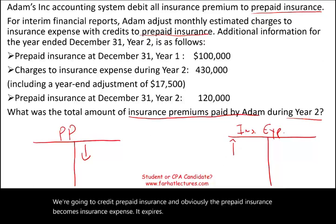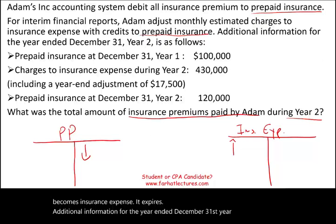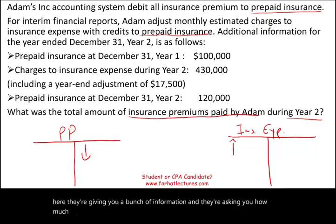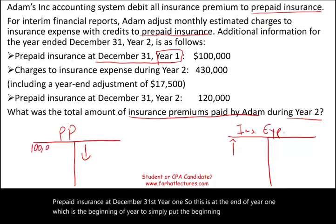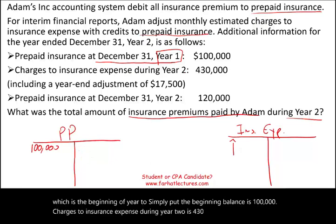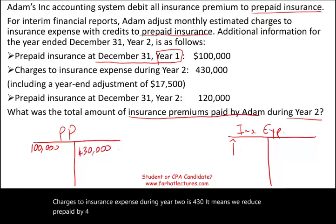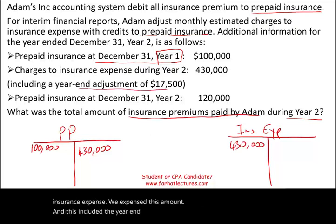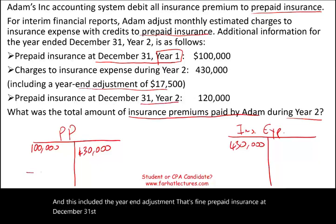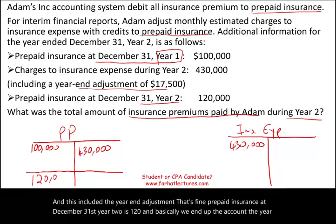Additional information for the year ended December 31st, year two is as follows. They're giving you a bunch of information and asking how much Adam purchased in insurance during year two. Prepaid insurance at December 31st, year one — the end of year one, which is the beginning of year two — the beginning balance is $100,000. Charges to insurance expense during year two is $430,000, meaning we reduce prepaid by $430,000, crediting prepaid to insurance expense. Prepaid insurance at December 31st, year two is $120,000 — we end the year with $120,000.